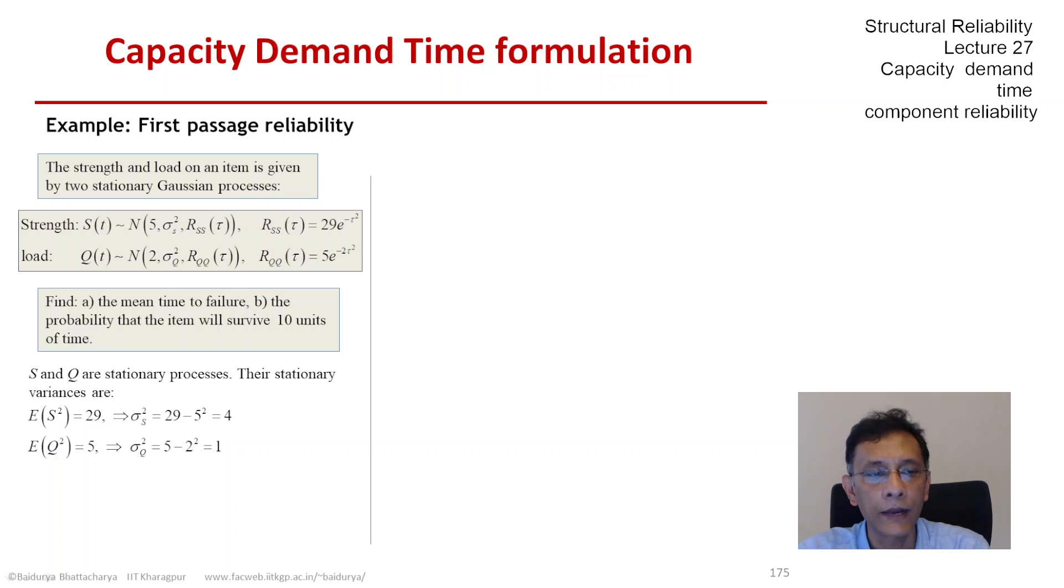So that is 29 minus 5 squared, and E[Q²] is 5, so sigma_Q squared is 1. These quantities we are going to use very soon.